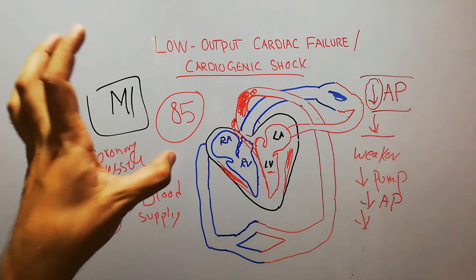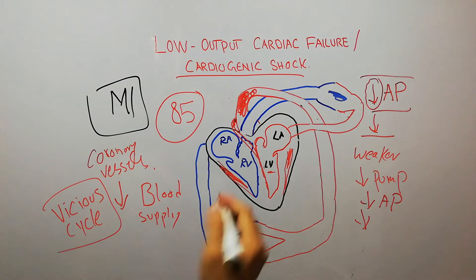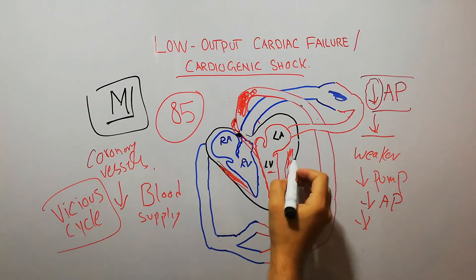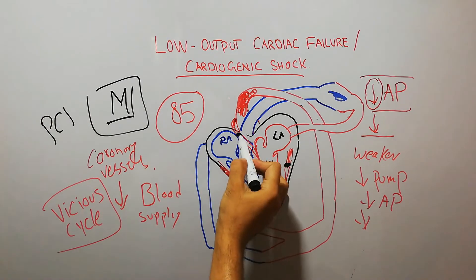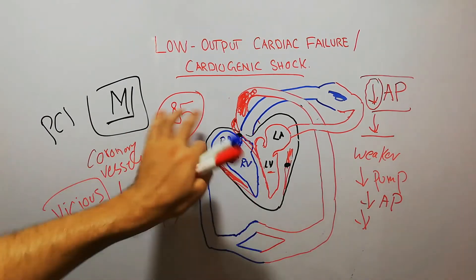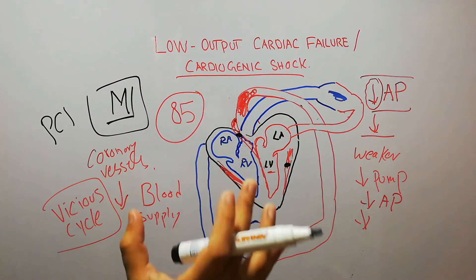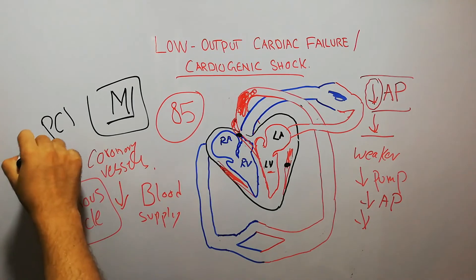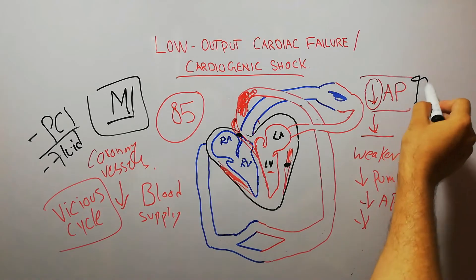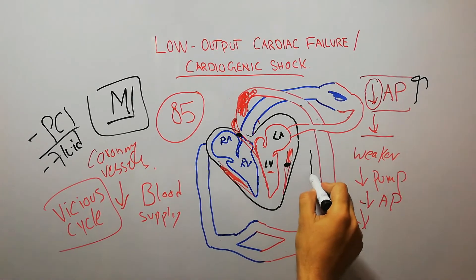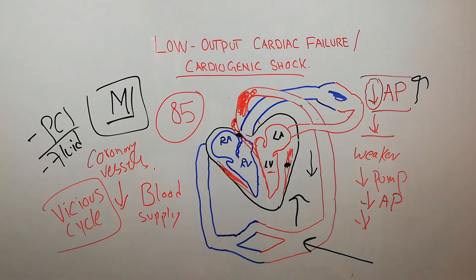If cardiogenic shock occurs suddenly — for example due to a sudden blockage in the coronary vessels from myocardial infarction — acute interventions must be done, such as percutaneous coronary intervention (PCI) to remove the clot. If the clot is removed, the cardiogenic shock can be treated and the patient may recover. Other steps include supplying more fluids to increase arterial pressure, which helps increase coronary circulation.